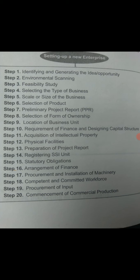The sixteenth step is arrangement of finance. The entrepreneur identifies long-term and short-term financial requirements and how to fulfill them — either by taking a bank loan or issuing shares and debentures. The seventeenth step is procurement and installation of machinery, which must be done with the help of technically experienced personnel. The eighteenth step is building a competent and committed workforce — deciding whether skilled or unskilled employees are needed, the number and type required, training needs, and how to keep them motivated.